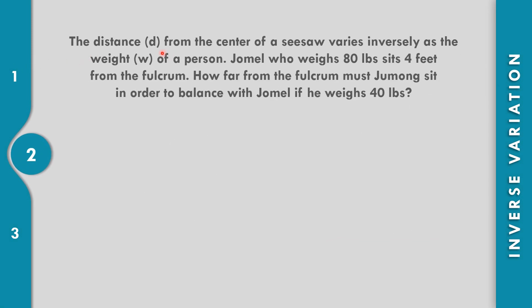In example number 2, the distance D from the center of a seesaw varies inversely as the weight W of a person. Jomel, who weighs 80 pounds, sits 4 feet from the fulcrum. How far from the fulcrum must Jomel sit in order to balance with Jomel if he weighs 40 pounds? Our formula: D varies inversely, so D is equal to k over W.